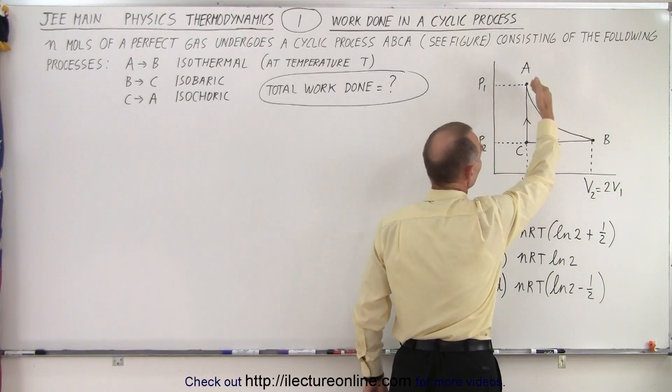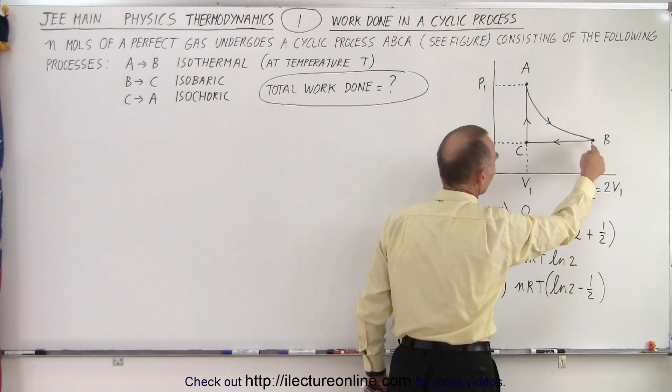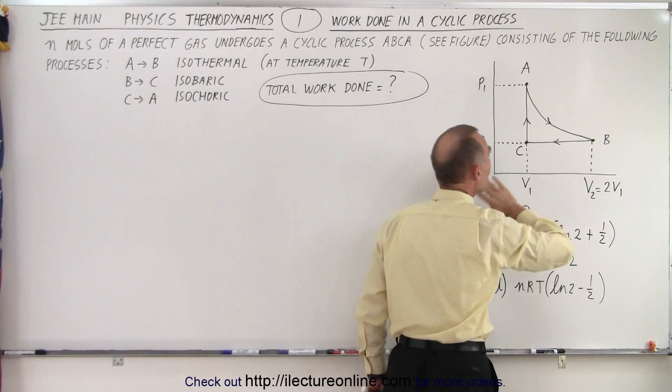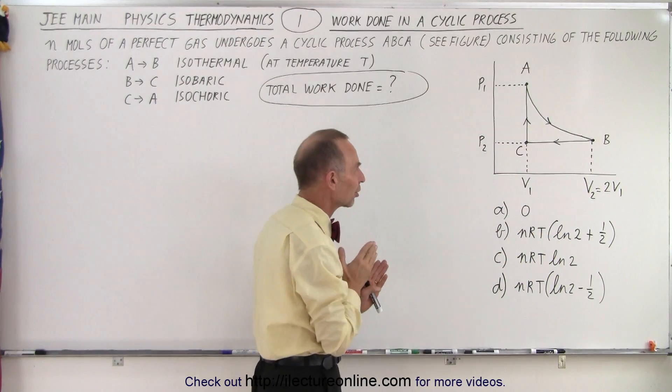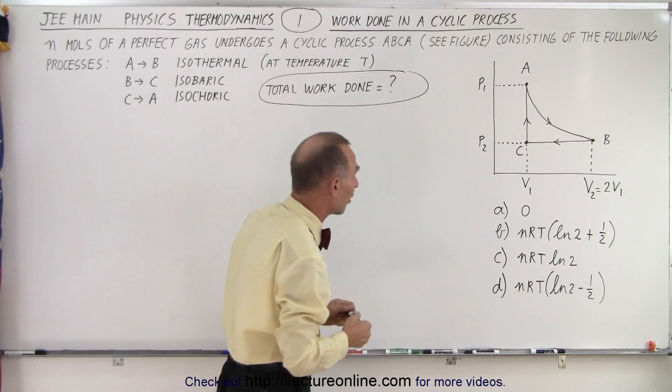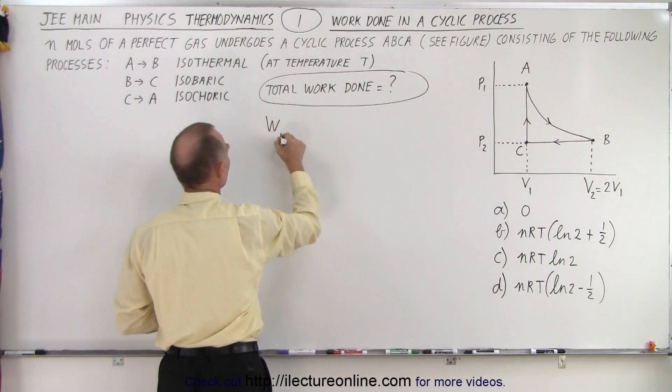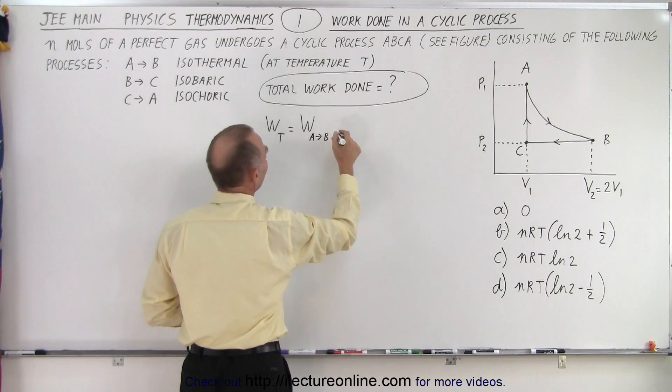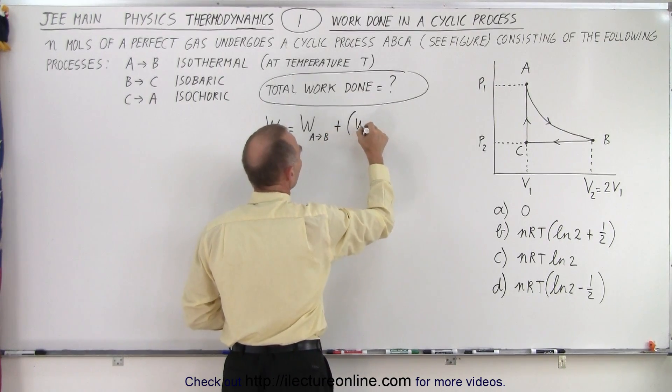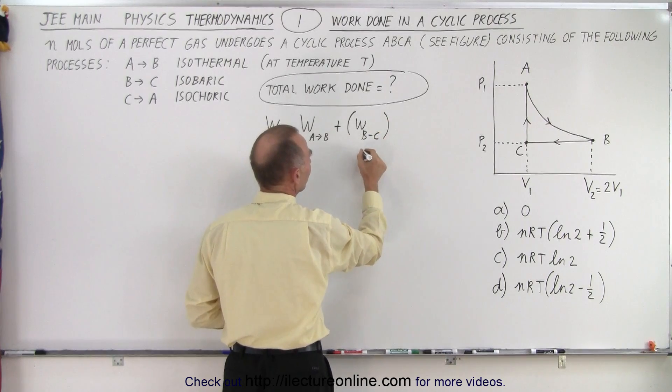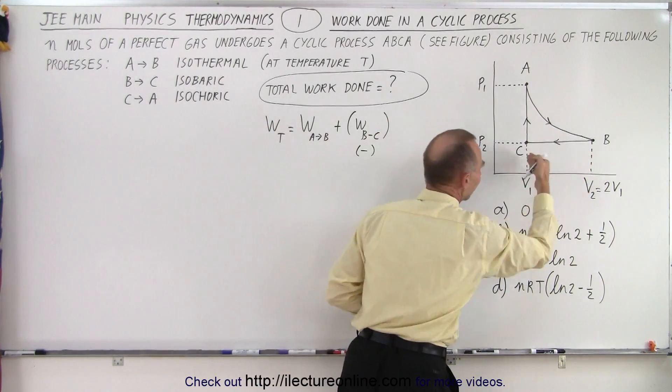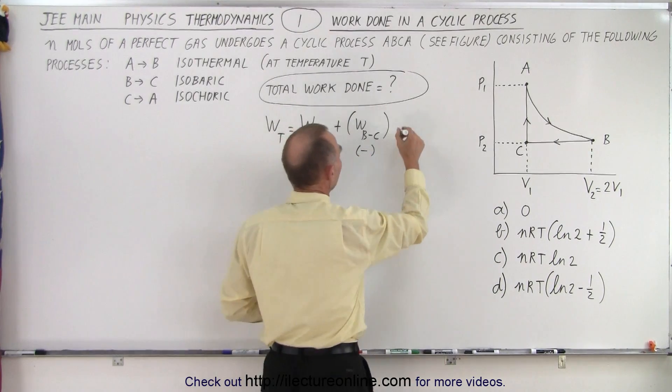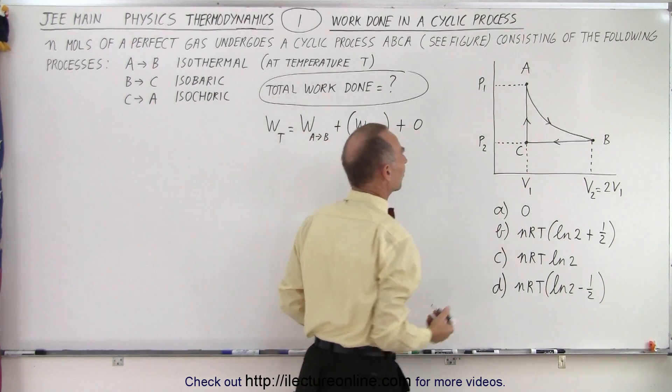Going from A to B, work is done by the gas, so that's called positive work. Going from B to C, work is done on the gas, that's negative work. And then going from C to A, no work is done because there's no change in the volume of the gas. You can only do work if there's a change in volume. So that means the total work is equal to the work done going from A to B, plus the work done going from B to C, but that's going to be a negative quantity because we're compressing the gas.